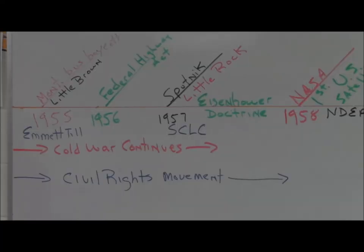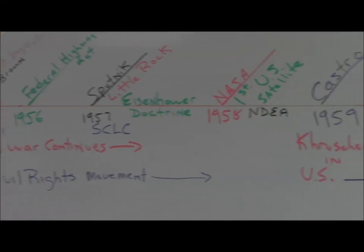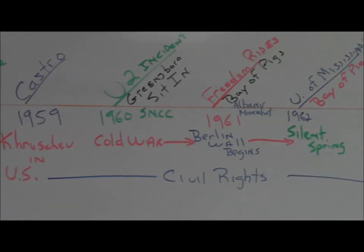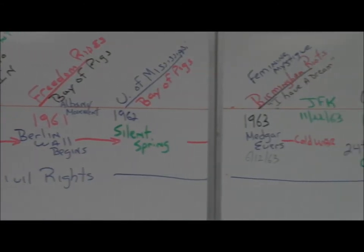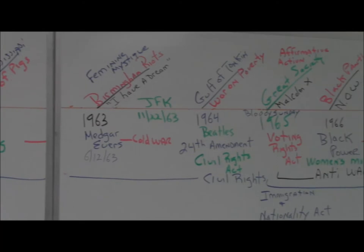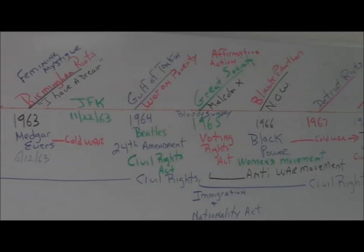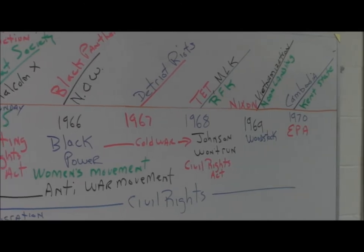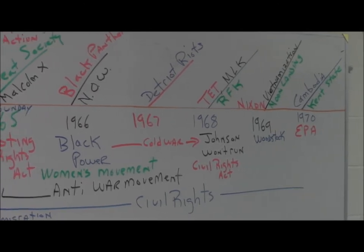Our timeline begins in 1955 with the Montgomery Bus Boycott, the second Brown decision, and the Emmett Till incident. We're going to move through the 1950s to the 1960s as the Cold War is really heating up.